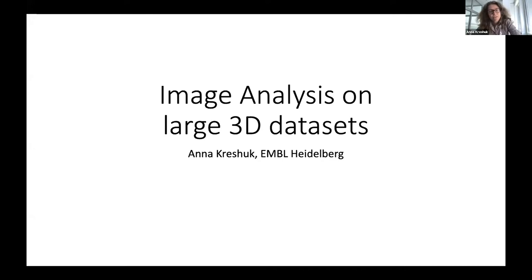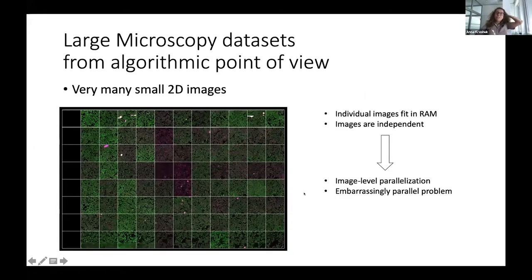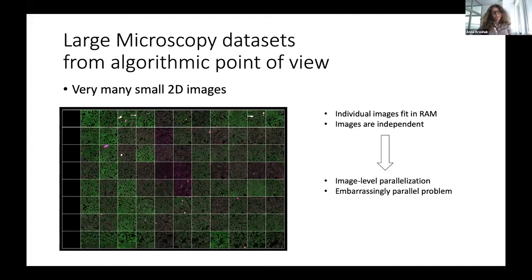I want to concentrate on large 3D data sets, because this is what we mostly do in our group. If you look at different large microscopy data sets — we are talking about large data sets because I don't think anyone has problems with storing small data sets — you can have very many small 2D images, like in high content, high throughput screenings like we saw yesterday. Each of those images could be a very challenging image analysis problem, but parallelizing it is not difficult because all the images are independent, each image fits in RAM, so you basically just submit all those jobs per image, they all come back, everything is good.